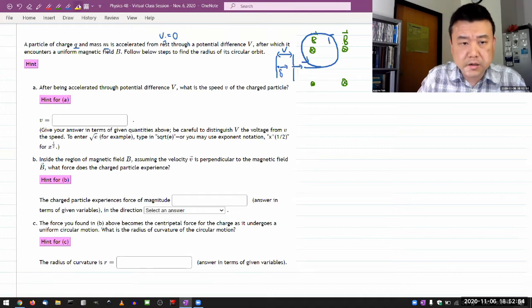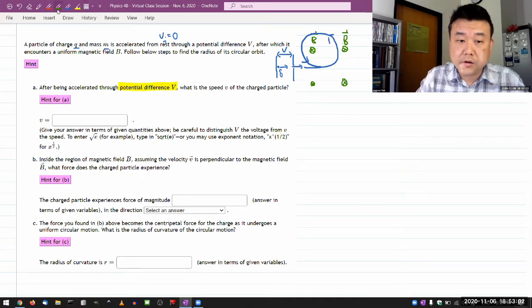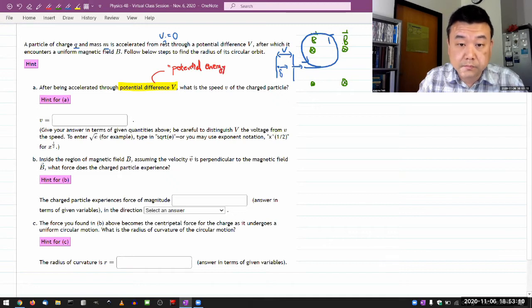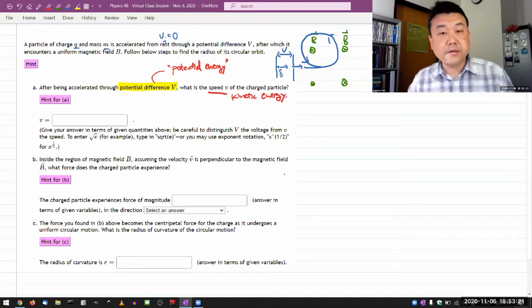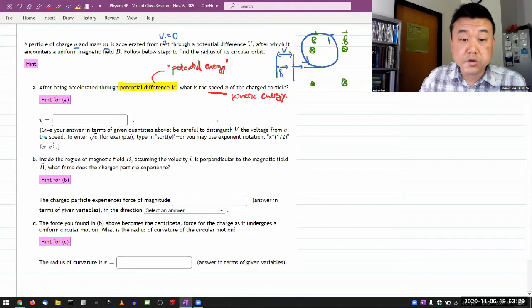And I hope some of the words here are enough of a reminder for you on what technique you should be using. The potential difference should be reminding you of potential energy. And once you are keyed on the potential energy, then speed you should associate with kinetic energy. So you should be thinking about answering this using conservation of energy.